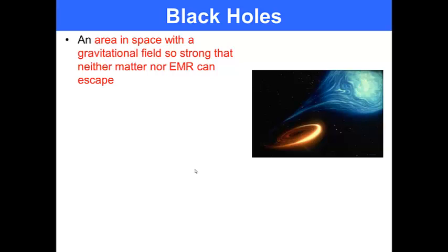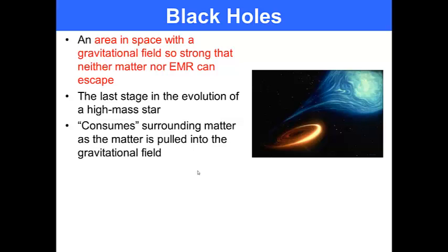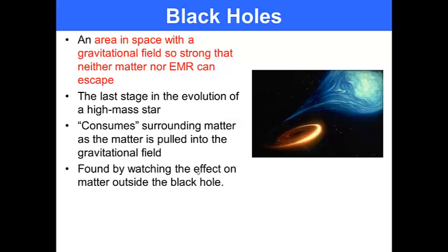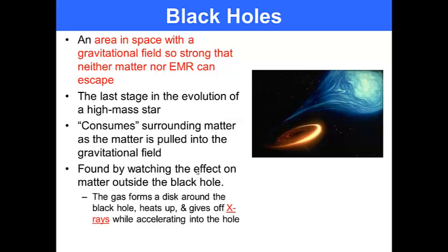Black holes are an area in space with a gravitational field that is so strong neither matter nor electromagnetic radiation can escape it. It is the last stage of evolution of a high mass star. It consumes surrounding matter as the matter is pulled into the gravitational field. It is found by watching the effect on the matter outside of the black hole. A gas forms a disk around black holes. It heats up and gives off x-rays while accelerating into the hole.